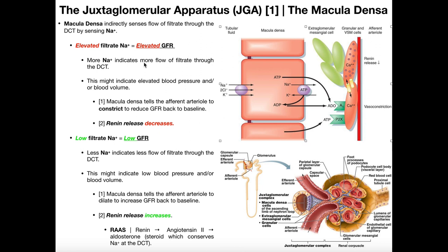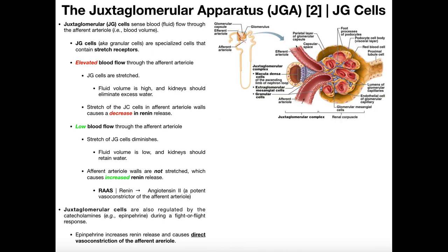In the next video, we're going to pick up with more details on the juxtaglomerular cells — specifically, how they can intrinsically regulate renin release just by sensing the amount of blood flow through the afferent arteriole. Hopefully this made sense to you.